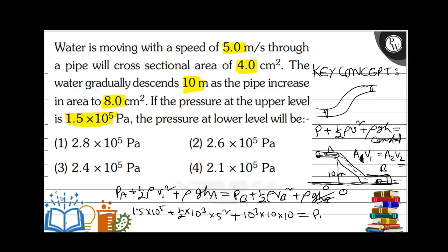Pressure at B is unknown. On the B side: half rho v_B squared, where v_B equals A1 over A2 times v1. A1 is 4, A2 is 8, v1 is 5, so v2 equals 4 over 8 times 5, which is 5 by 2 — the area is double so the speed is half, giving 2.5 meters per second.